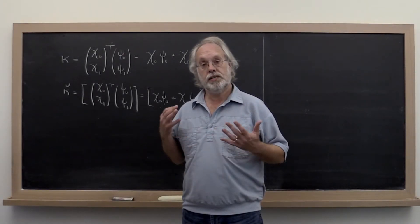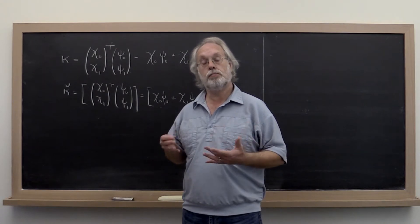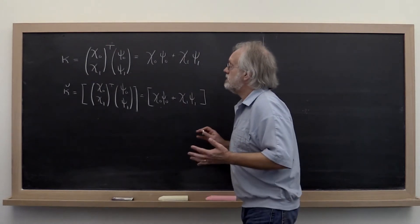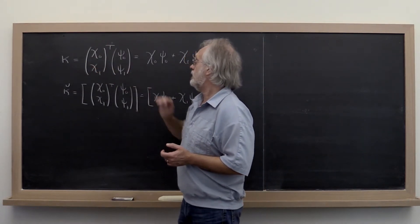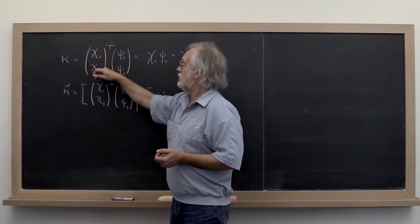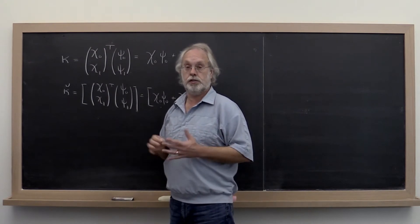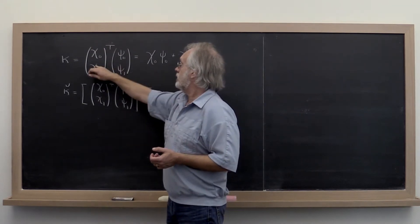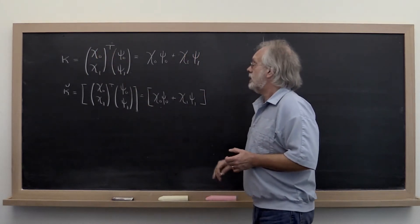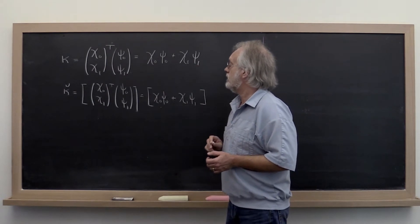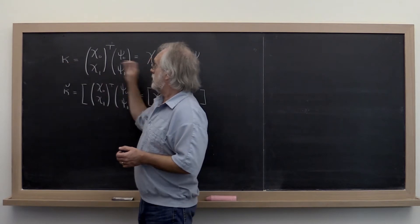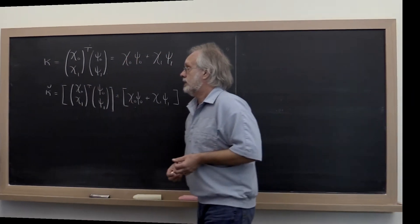In this unit we are going to examine how error propagates when we compute a dot product. We'll start with a very simple example where the vectors only have two elements each, dealing only with real-valued vectors. So instead of x Hermitian transpose times y, we're going to have x transpose y. If we write that out we get this expression, and we're going to say that the result is stored in kappa.